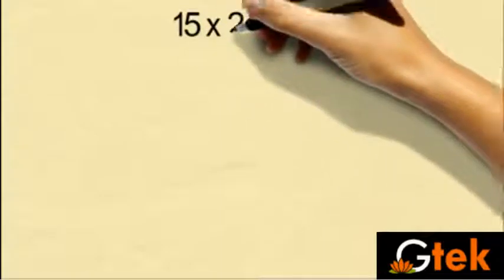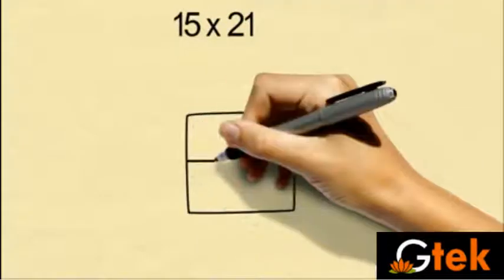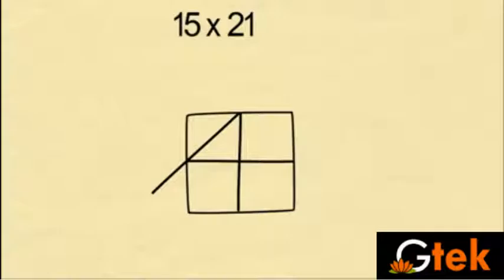Let us see another one example. 15 into 21. 1, 5 into 2, 1.